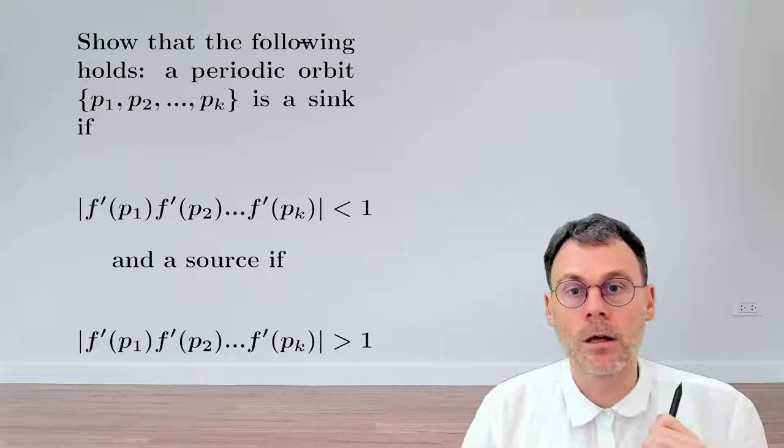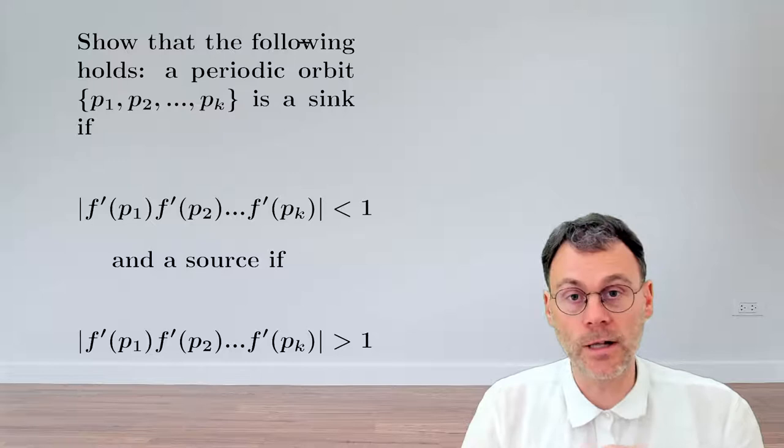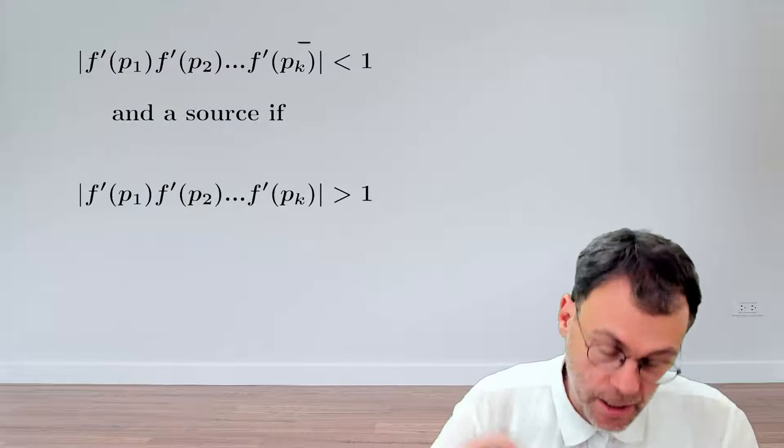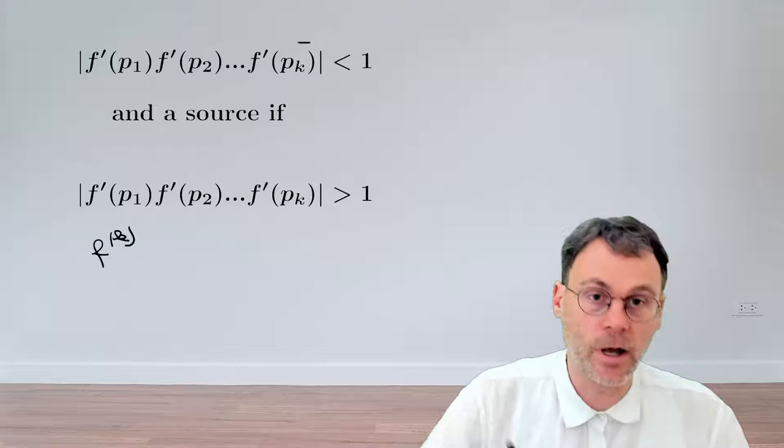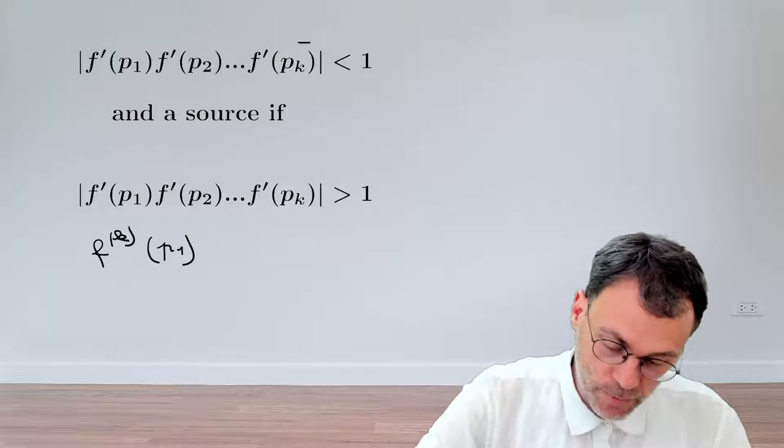Now, if we have a periodic orbit for a certain map f, we know that we can translate that into a fixed point of the map f applied k times in case we have an orbit of period k. So we can write that the function f applied k times, if we apply that composite function to, for example, the point p1 of our periodic orbit, this will give us back p1.